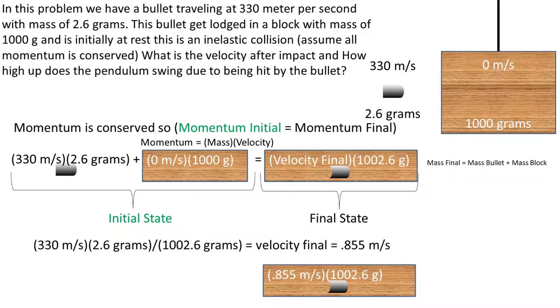Now we can use algebra to get velocity final to one side. Plugging in our values into the calculator, we get a velocity final of 0.855 meters per second. Keep in mind, this equation assumes that all momentum is going into motion, and this happens instantaneously.